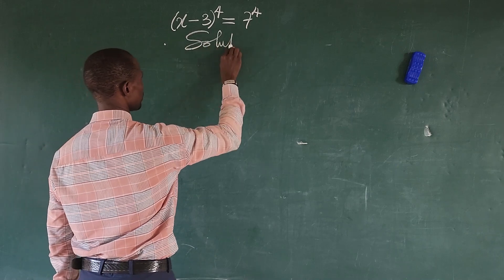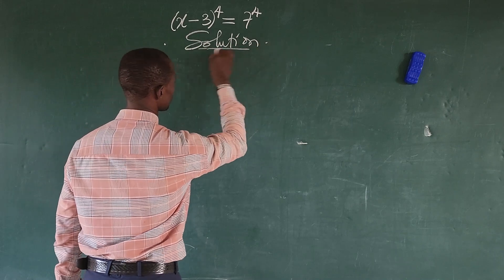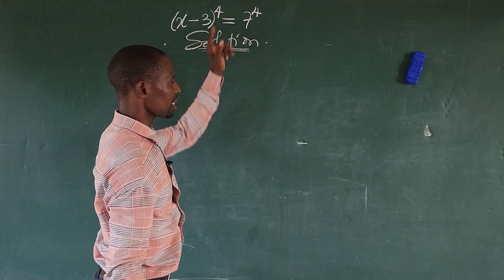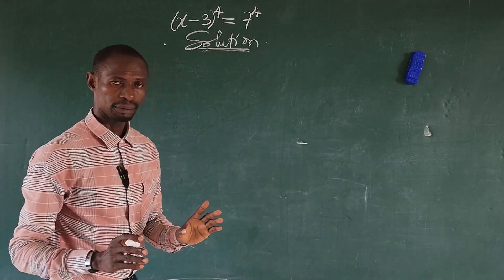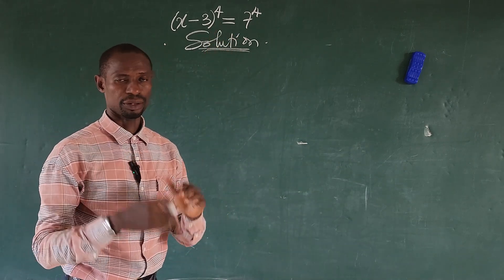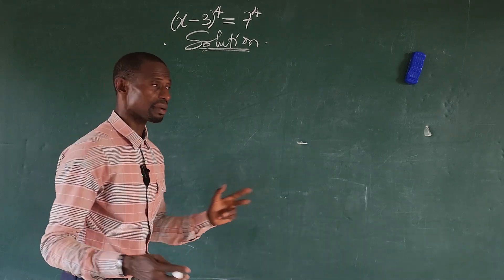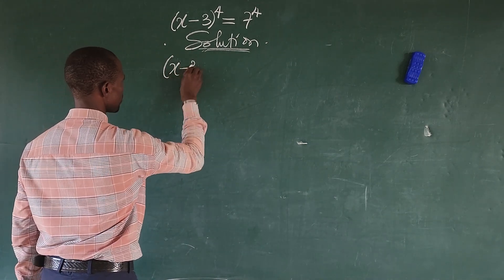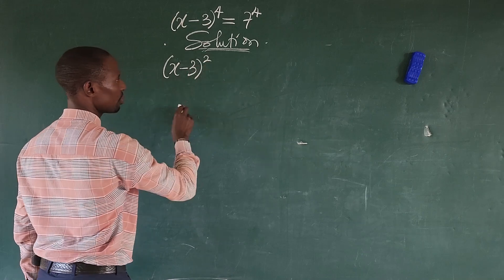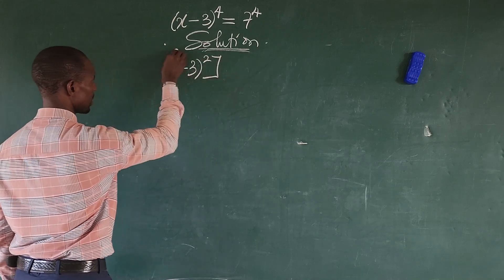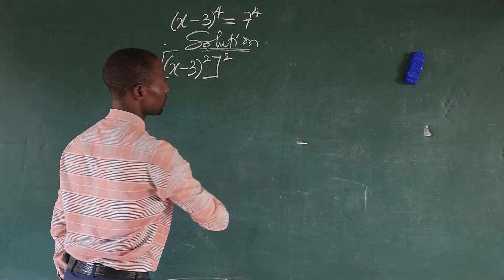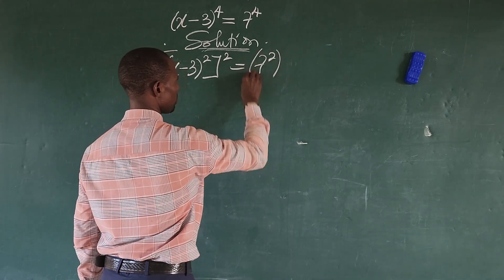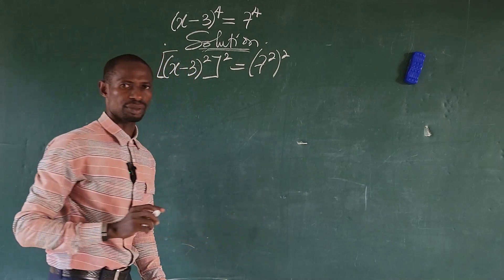So we take our solution as usual. Now, seeing what we have here at the power of 4, we can bring out the power of 2 from this. Let's rewrite the equation first. So we're going to have x minus 3, all to the power of 2, all in brackets, to the power of 2. This is equal to 7 to the power of 2, all in brackets, to the power of 2.